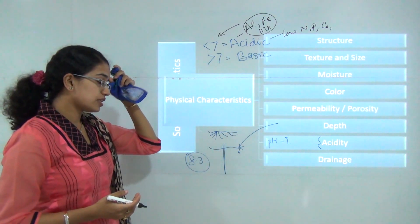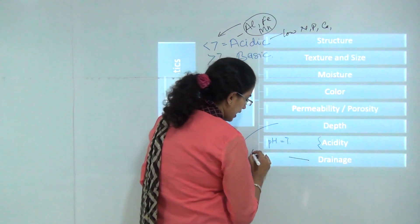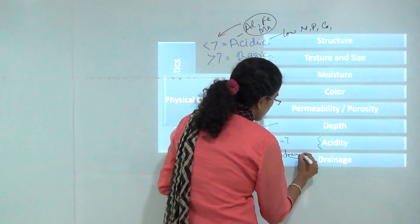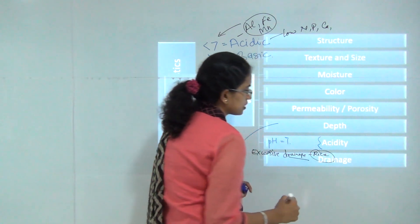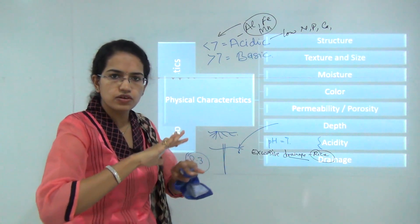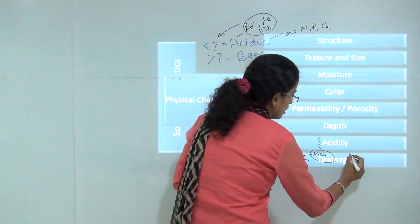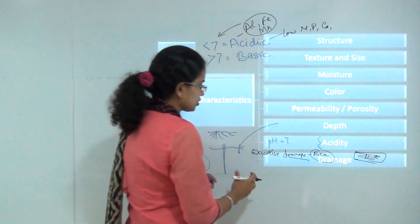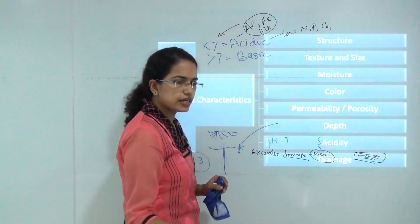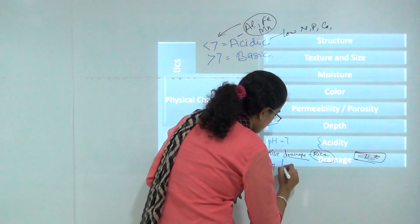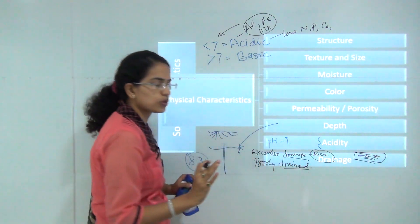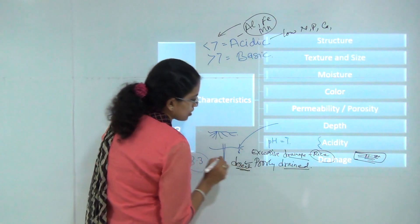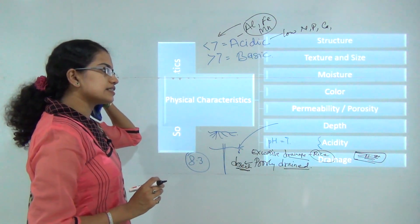The next physical characteristic is drainage. Soil can be classified as excessively drained — for example, rice is grown in areas which are excessively drained, where water is flooded into the fields to grow paddy crops. You can also have very drained soil or poorly drained soil, where drainage is not good — usually found in desert areas.